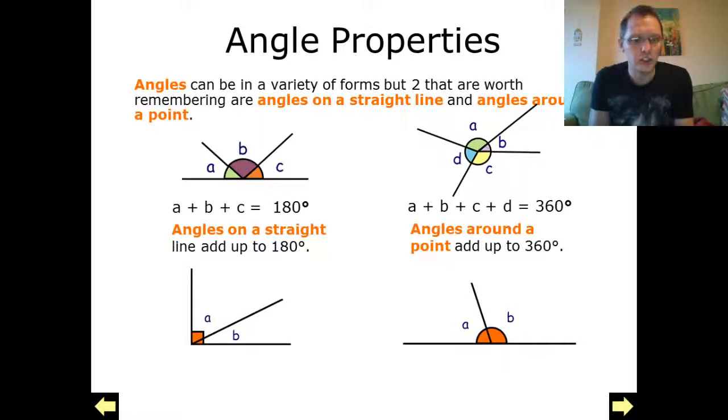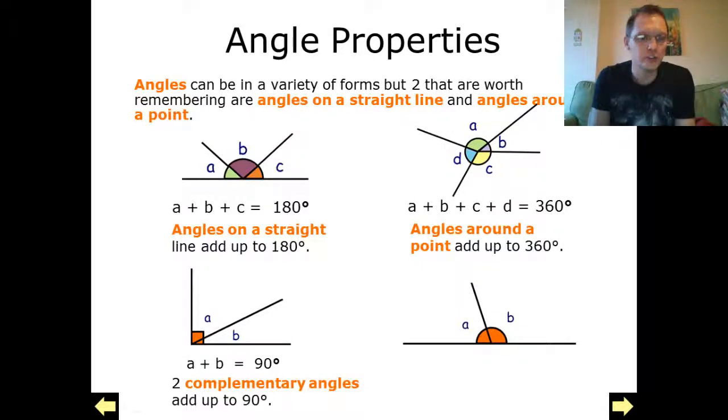Two other different types of angles that we could be made aware of. We've got our complementary angles. So this is when we're talking about right angles and we've got an angle coming away from this. These are complementary. Both these two angles add up to 90 degrees.